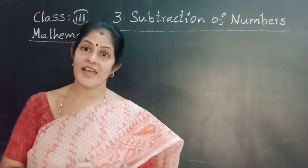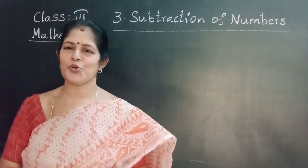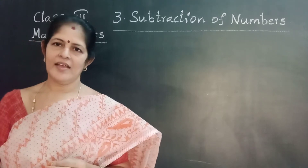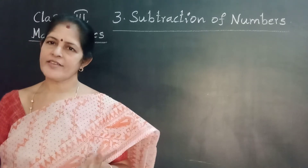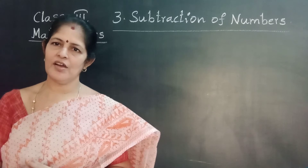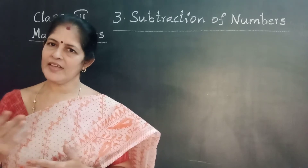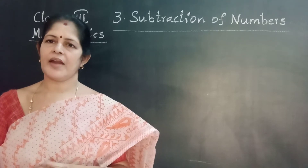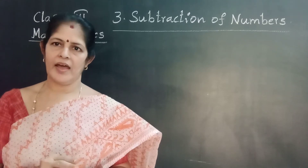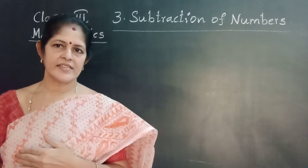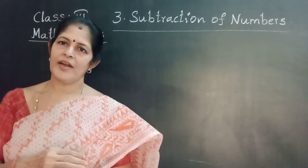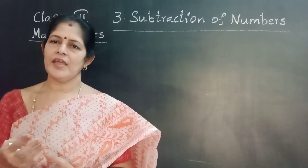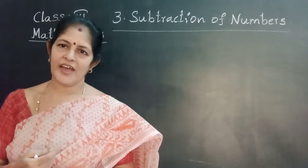Here are the subtraction facts — don't forget the rules. Rule one: when we subtract zero from a number, the result does not change. Number minus zero equals the same number. When we subtract one from a number, the difference is one less than the number.